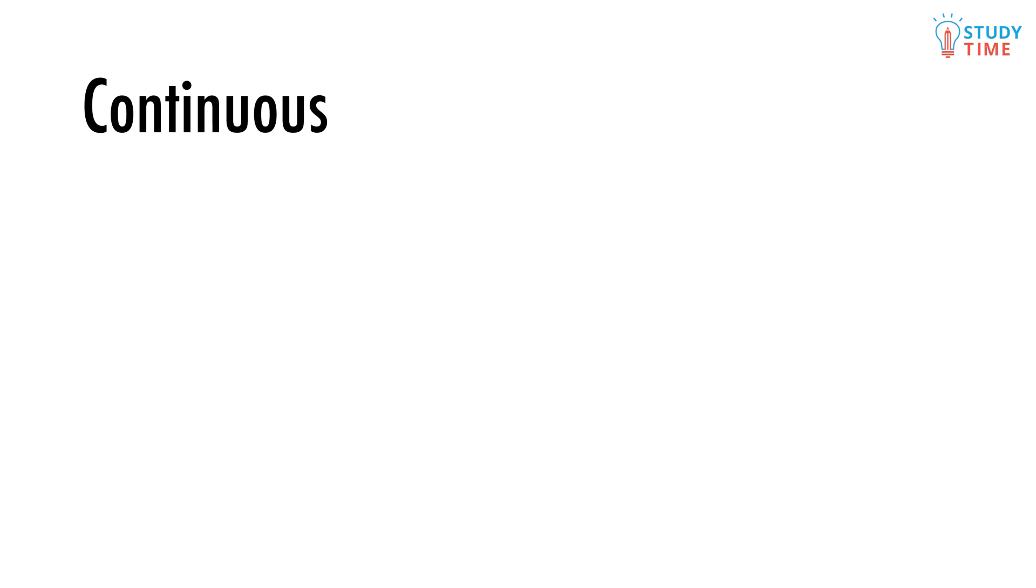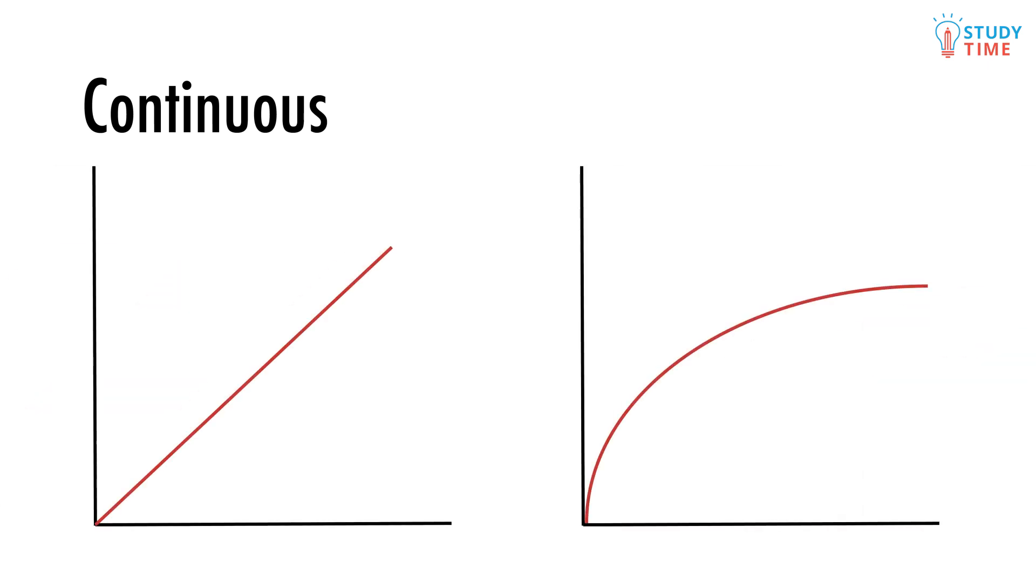Think of a graph of how fast you are walking, or a graph showing how the temperature changes throughout the day. Instead of being in clumps, there's a value available at every point along the graph.